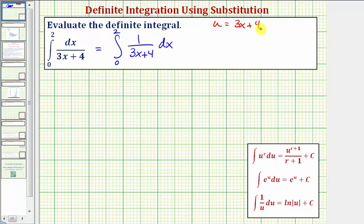The next step is to find differential u. Differential u is equal to the derivative of three x plus four times dx, which would be three dx. Notice how we don't have three dx in our integral, so we'll solve this for dx by dividing both sides by three.